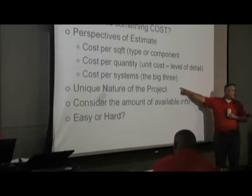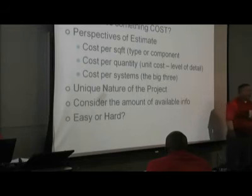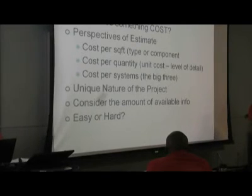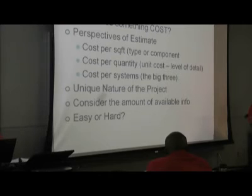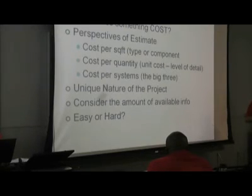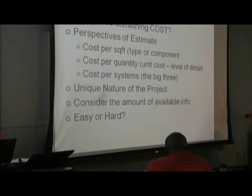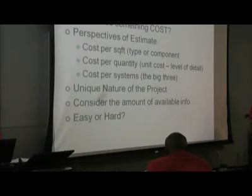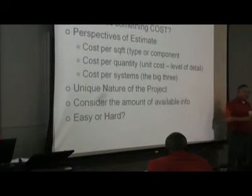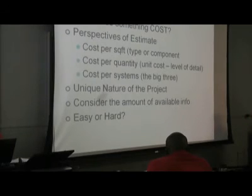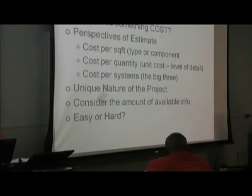What makes this such a challenge and such an art is that projects in their nature are all different. If you had a hundred health and biomedical science buildings, what is the probability they'd all be identical? Zero. Because everyone is designed by a unique architect and engineer, functions differ, and timing affects costs. So all these variables make projects unique — there's no way they can cost the same. But it's still information, and that's what the Means book helps you with. It gives you that data.